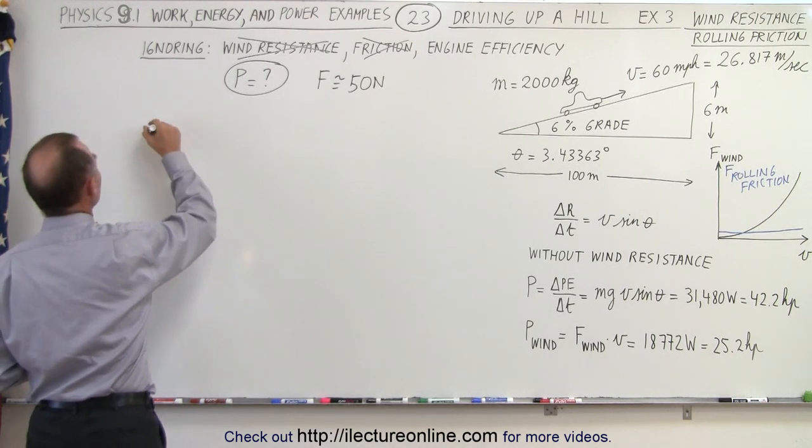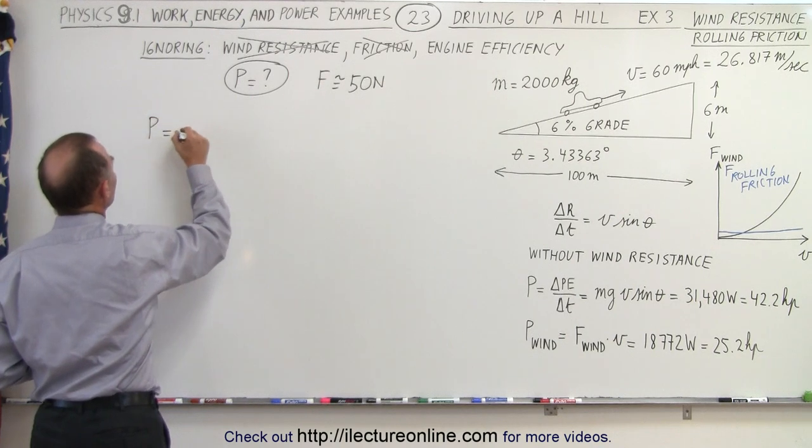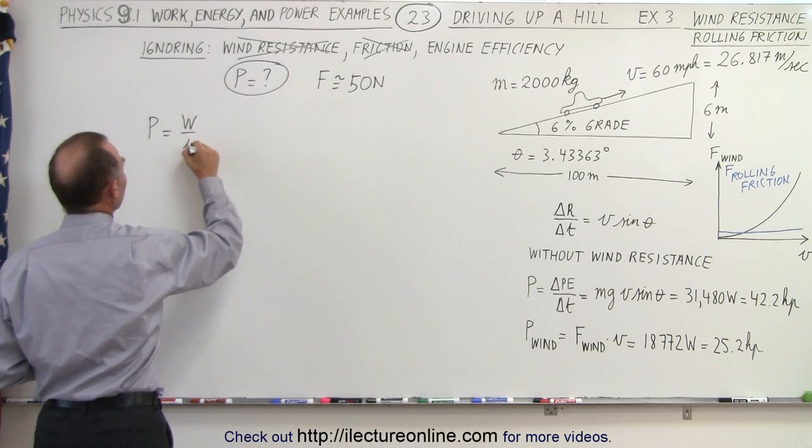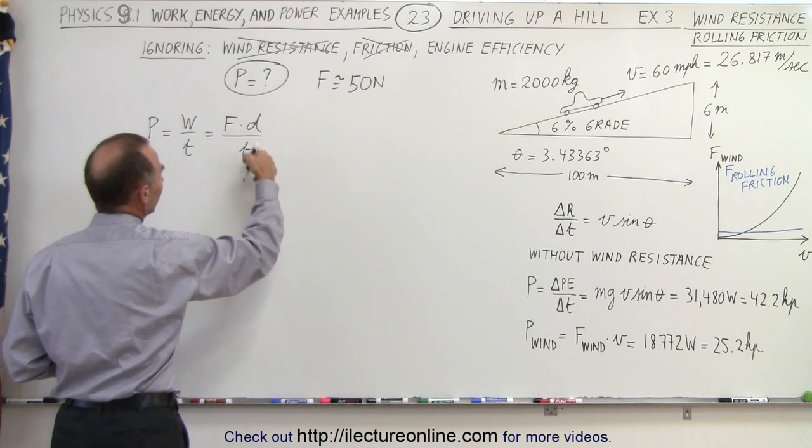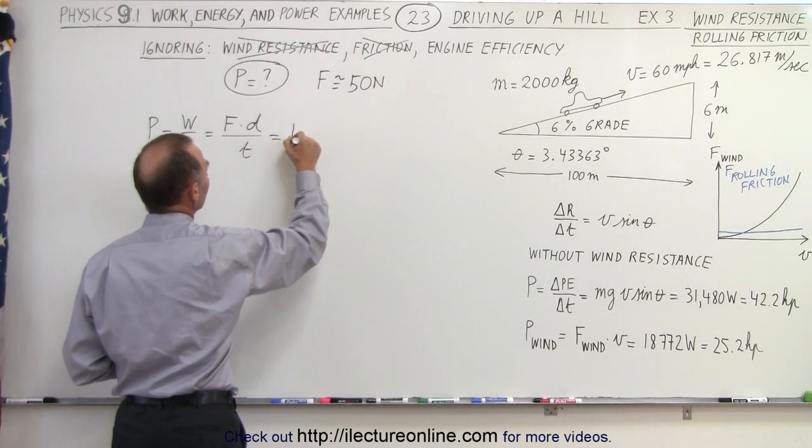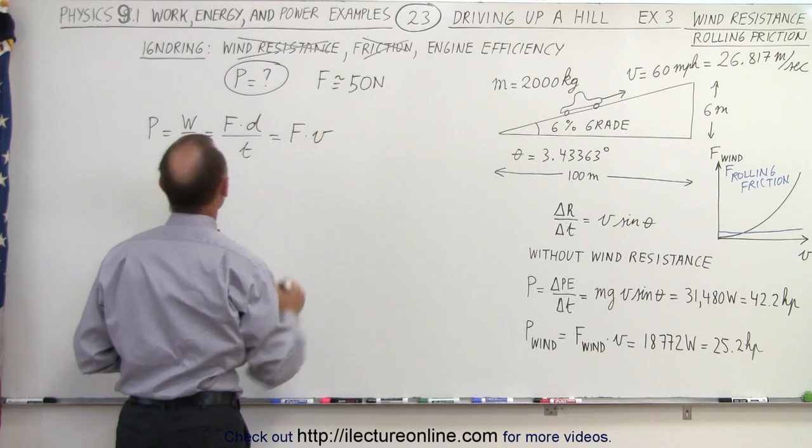The definition of power is equal to work divided by time, and work is force times distance divided by time. Distance divided by time is velocity, so power equals force times velocity.